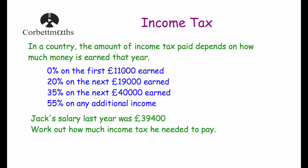Our last question is a calculator question. In a country, income tax depends on earnings: 0% on the first £11,000, 20% on the next £19,000, 35% on the next £40,000, and 55% on any additional income. Jack's salary last year was £39,400. Since he pays 0% on the first £11,000, we subtract £11,000 from £39,400 to get £28,400 that is taxable. He pays 20% on the next £19,000, so that accounts for all £19,000. We calculate 20% of £19,000 by multiplying by 0.2, which gives £3,800.